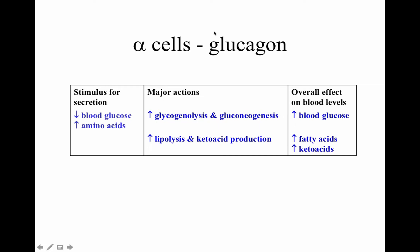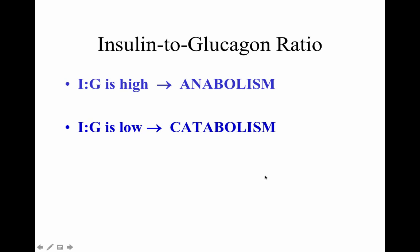Alpha cells in the pancreas produce glucagon. Glucagon's stimulus for secretion includes decreased blood glucose and increased amino acids. Major actions of glucagon include increased glycogenolysis — conversion of glycogen to glucose — and gluconeogenesis, creation of glucose from non-carbohydrate sources, as well as increased lipolysis and keto acid production to open other energy sources. The overall effect is increased blood glucose, fatty acids, and keto acids. Glucagon is catabolic, breaking down larger molecules to end up with glucose or glucose-like energy sources. When insulin-to-glucagon ratio is high, anabolism occurs; when low, catabolic processes occur.